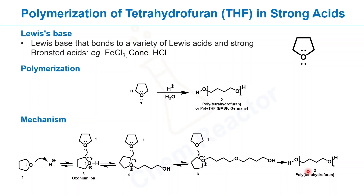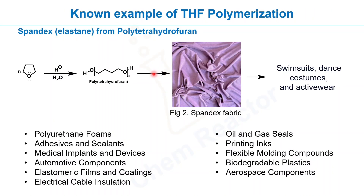In process chemistry, we use crystallization and filtration as the purification method to obtain the final product. So if you're using a strong acid together with THF as a solvent, that's not an ideal condition. You have to think carefully about using the combination of THF and concentrated HCl if you're working in process chemistry or organic synthesis.